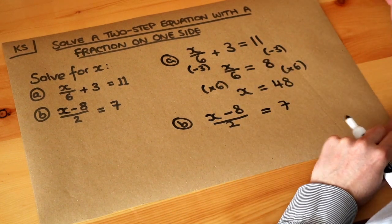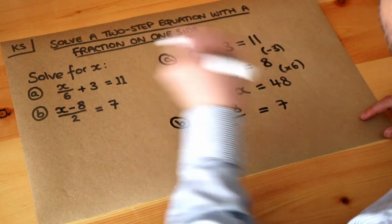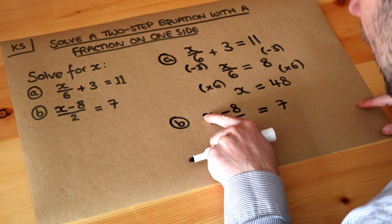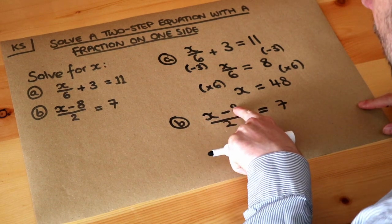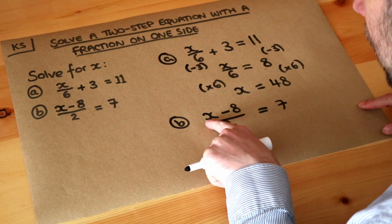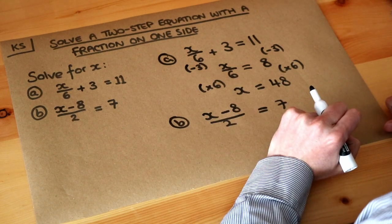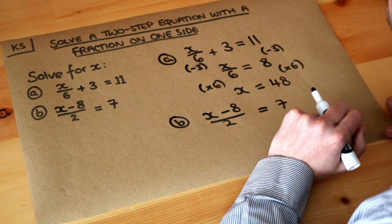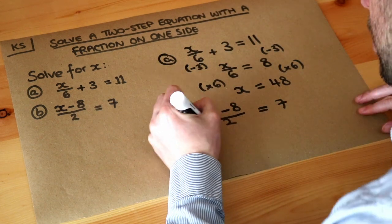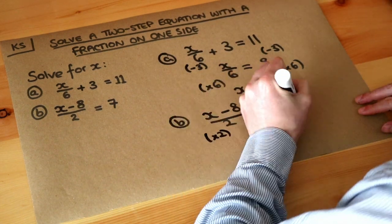Again, let's think about what's happening to x and then we're going to undo the last thing done to x. Well x, first we subtracted 8 from it and then it's been divided by 2. So the last thing that happened to x was it was divided by 2. So we do the opposite of divide by 2 which is to times both sides of the equation by 2.